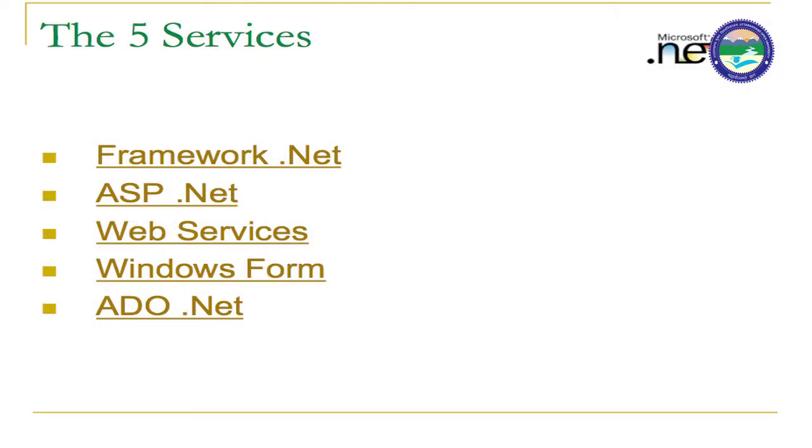There are five different services in .NET Framework: .NET itself, ASP.NET, Web Services, Windows Forms, and ADO.NET. ASP.NET is basically for client and server-side communication as well as connectivity. We can also develop many web services for websites. For GUI development we have Windows Forms, and for database connectivity we have ADO.NET.